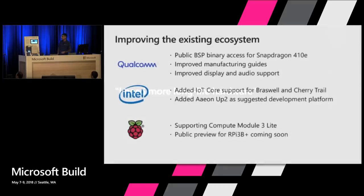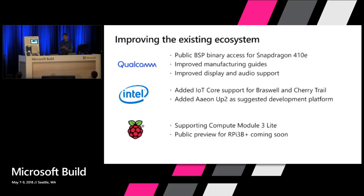Let's talk about the hardware piece in more detail. We started with our original partners in the Windows IoT ecosystem. With Qualcomm, they've enabled public BSP access for Windows and improved manufacturing processes so you can actually go to scale with Qualcomm solutions much more easily. They've also improved the BSP itself — better display outputs, better audio capabilities — enabling Windows IoT Core to enter markets like low-cost digital signage, sub-hundred dollar solutions. That's a real innovation we've seen a lot of positive feedback on.